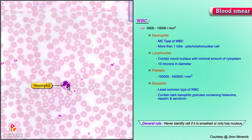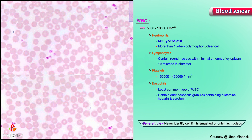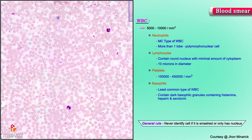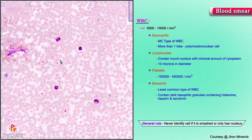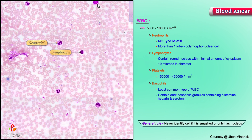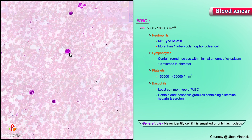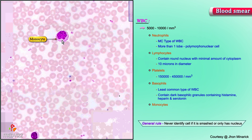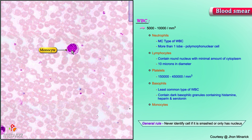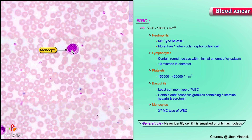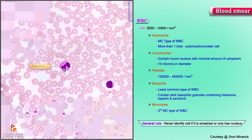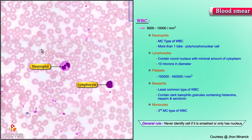Here is a granulocyte or a neutrophil. Here is another neutrophil. Here's a lymphocyte. And here's an interesting cell that has a somewhat convoluted nucleus, but it's not polylobed, and it has granules. This is a classical monocyte — the third most common type of white cell after the neutrophil and the lymphocyte.